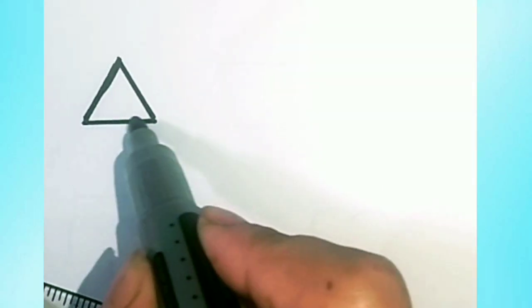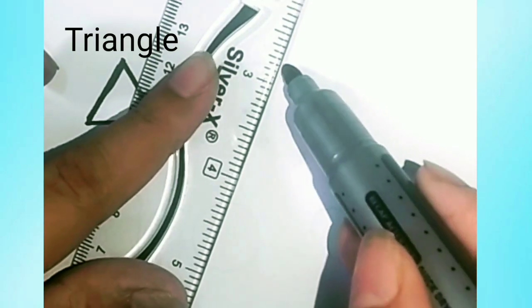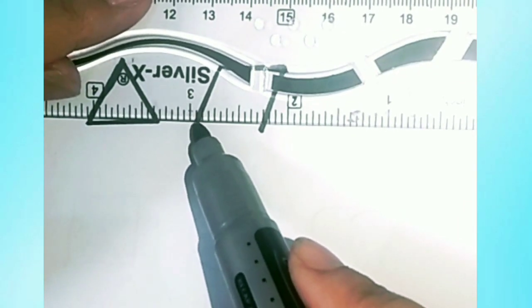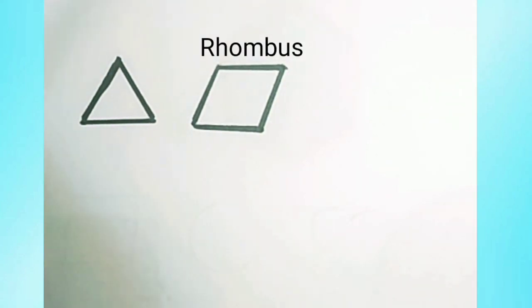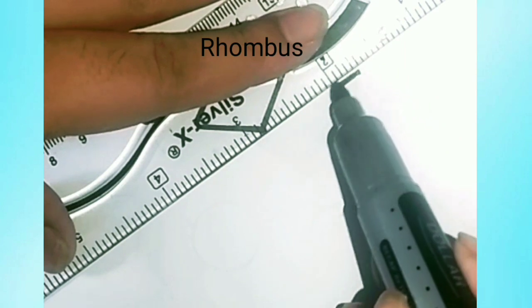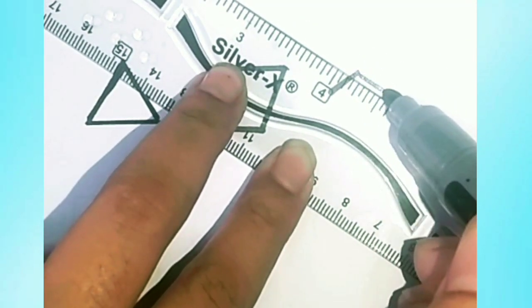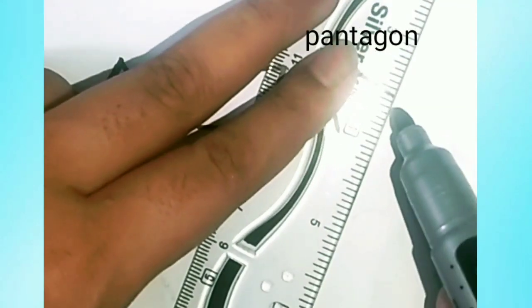We draw math shapes. First shape is triangle which are very easy. The other shape is rhombus which are also very easy. Let's draw a pentagon.